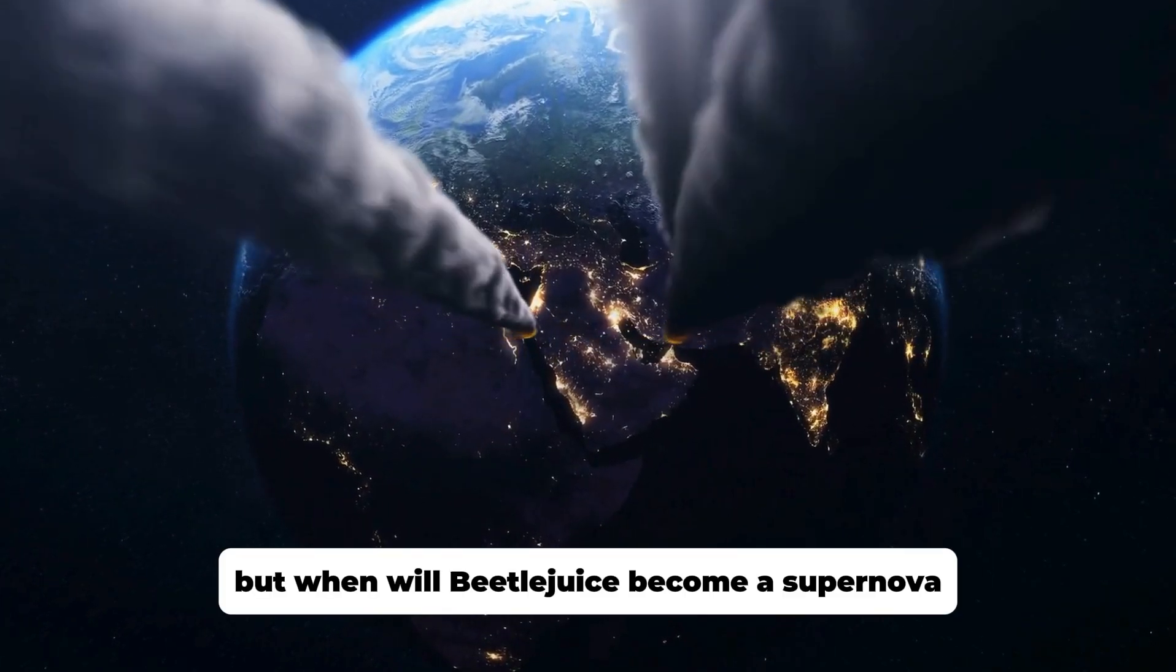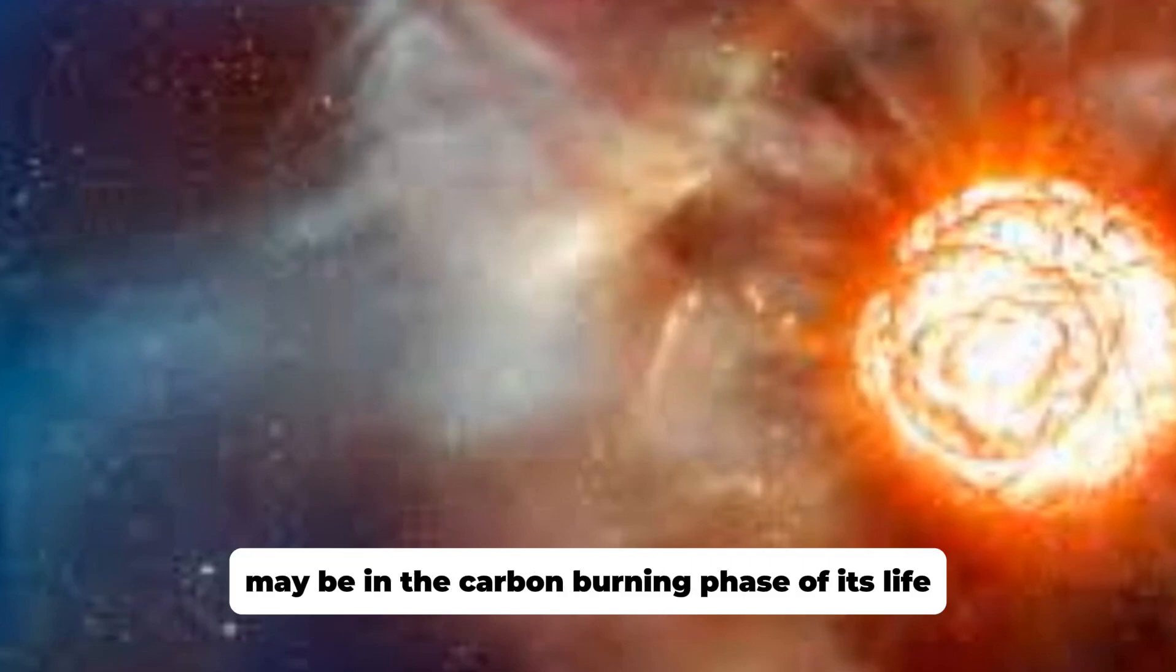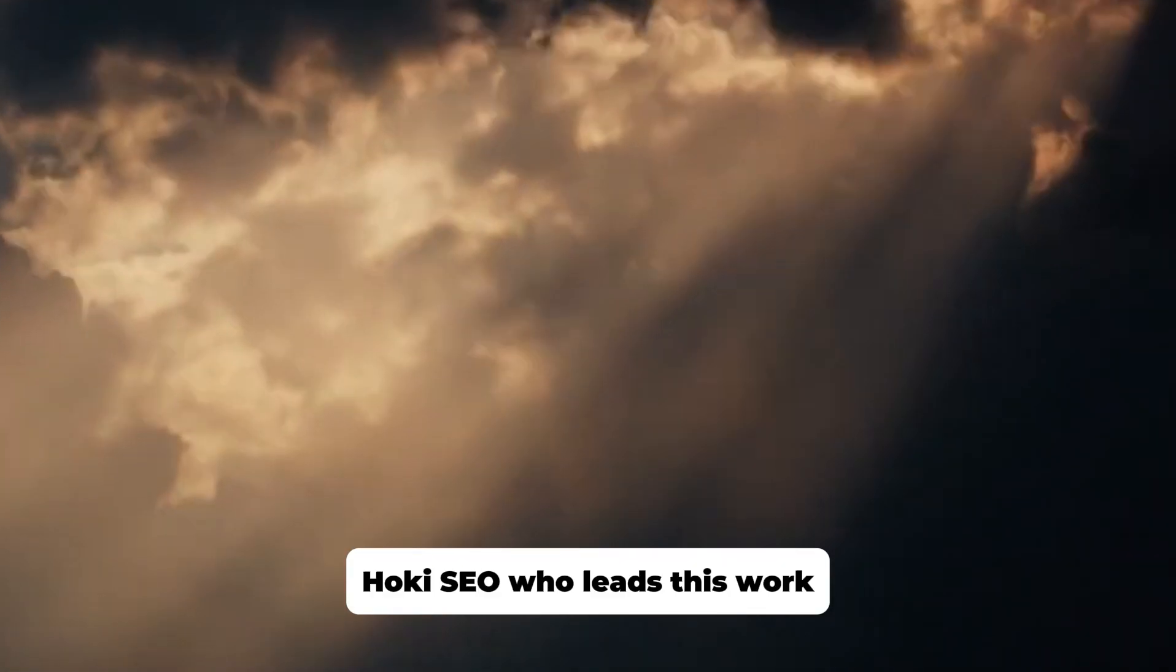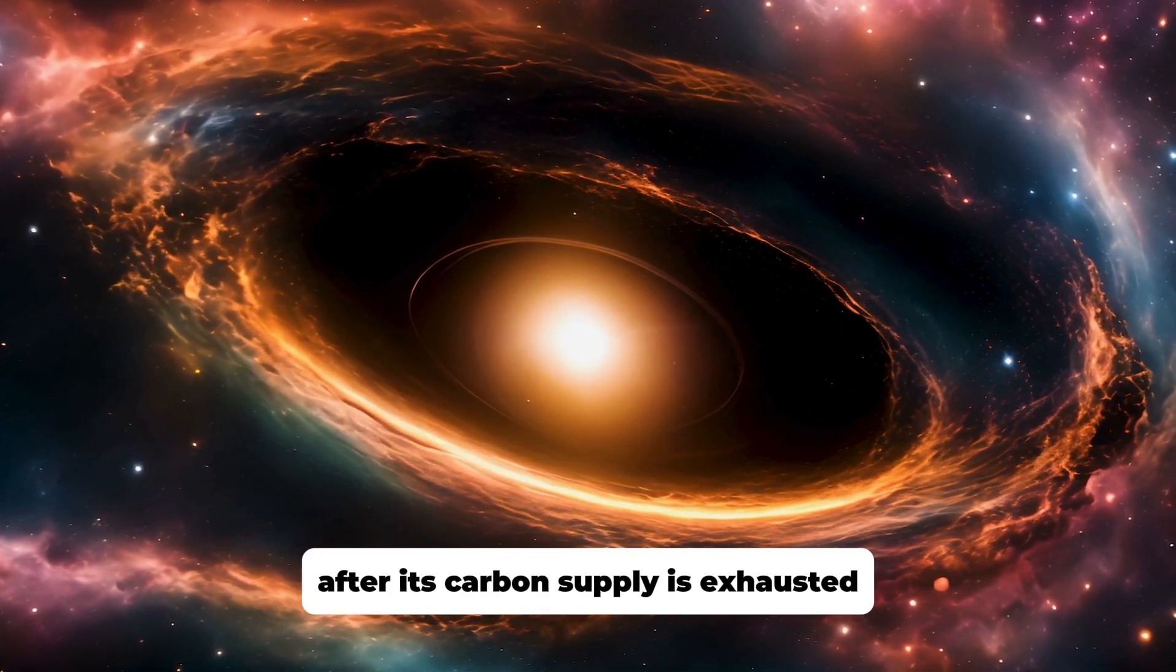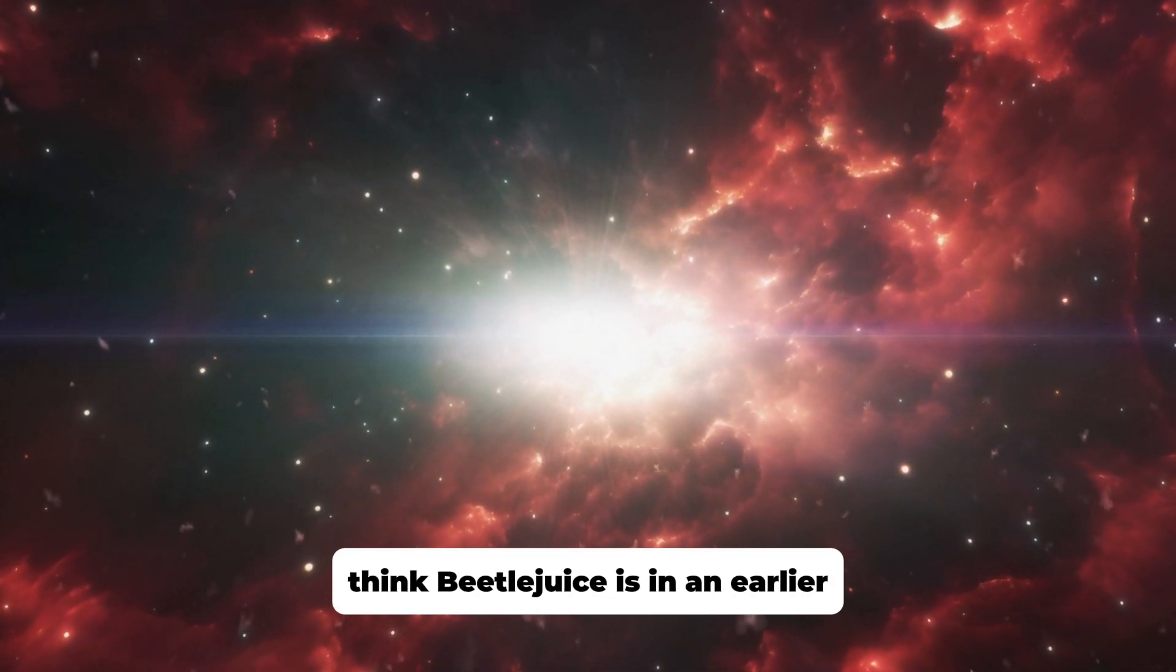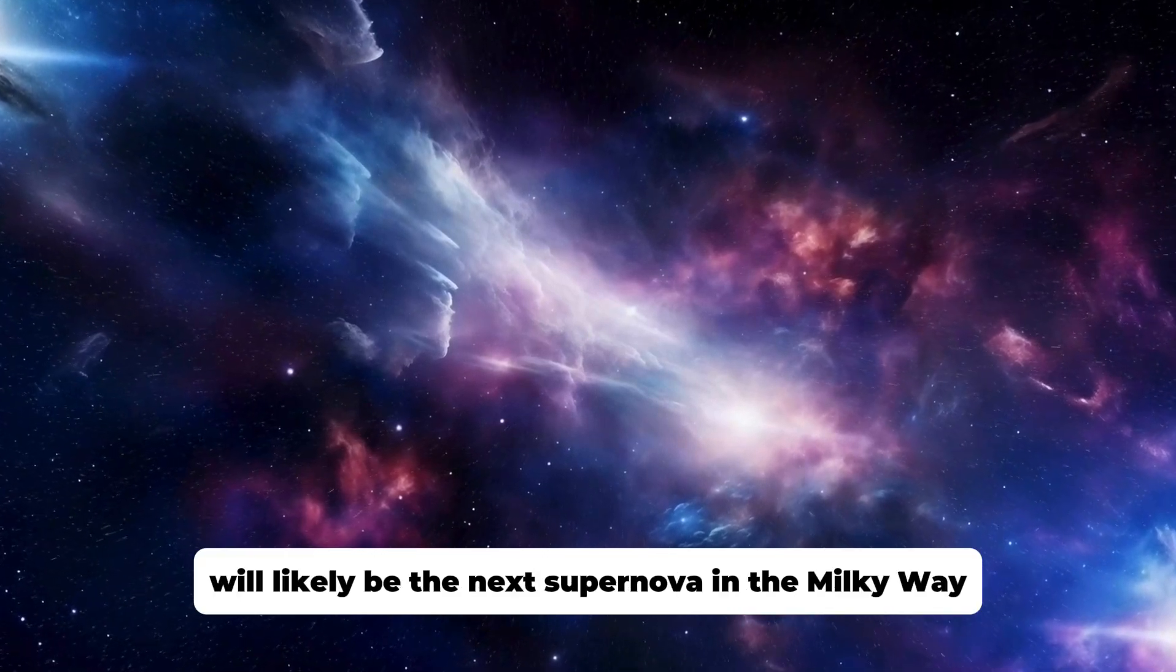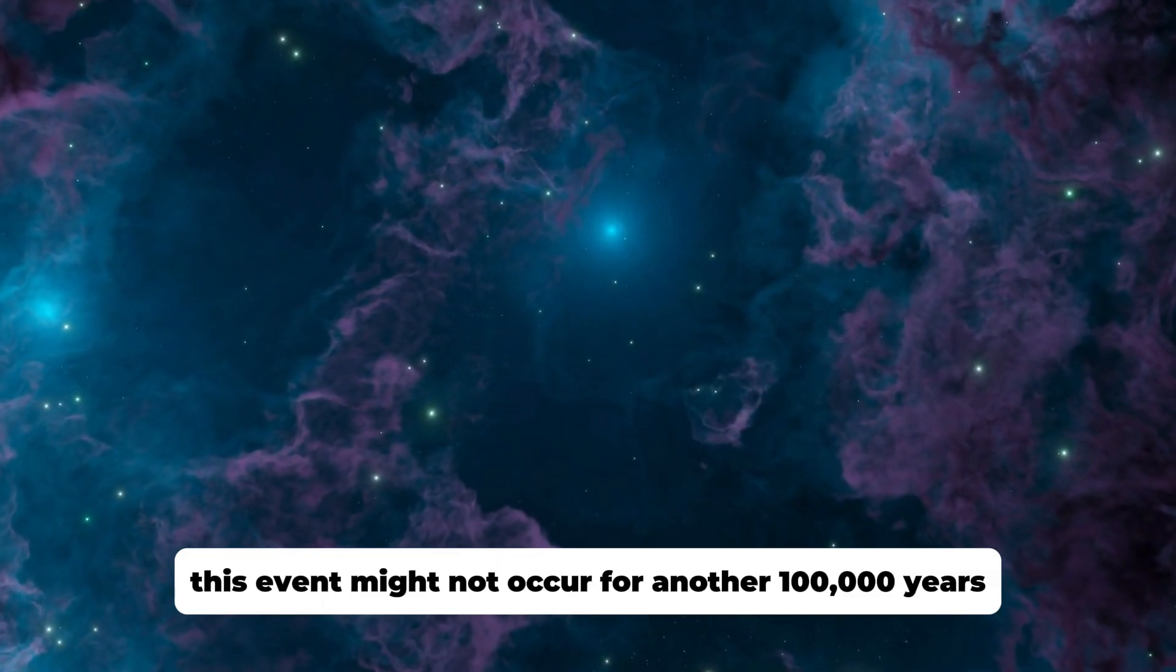But when will Betelgeuse become a supernova? Researchers at Tohoku University suggest that Betelgeuse may be in the carbon-burning phase of its life, a stage stars typically go through before they die. Hoki Seyo, who leads this work, believes that the star's core might collapse a few tens of years after its carbon supply is exhausted. On the other hand, scientists at Hungary's Konkali Observatory think Betelgeuse is in an earlier helium-burning stage. While there are differing opinions, most agree that Betelgeuse will likely be the next supernova in the Milky Way. However, this event might not occur for another 100,000 years.